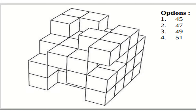Now let's count the cubes in the next structure, starting from the rightmost layer: one, two, three, four, five, six, seven, eight, nine, ten, eleven, twelve, thirteen — so the rightmost layer has thirteen cubes.